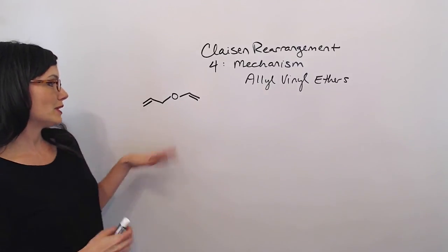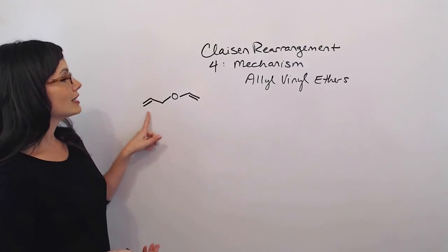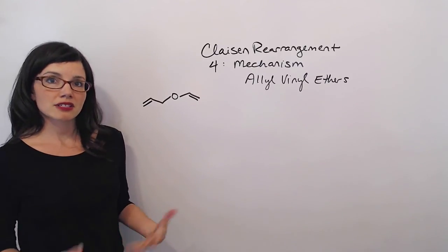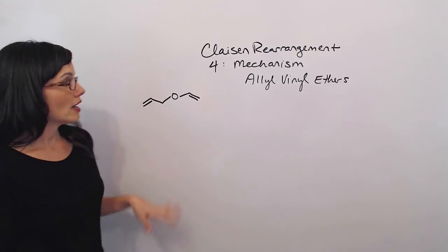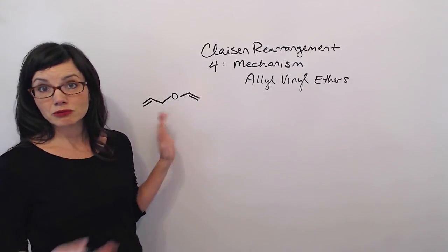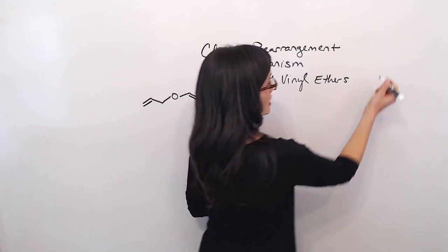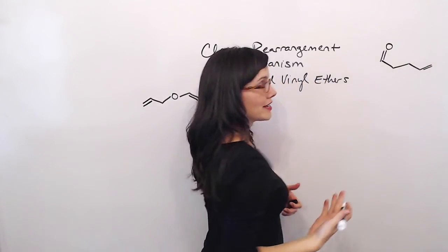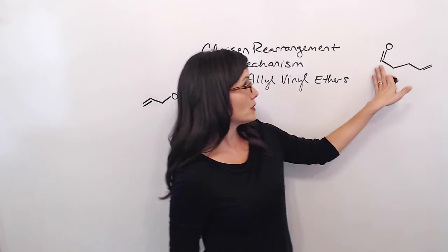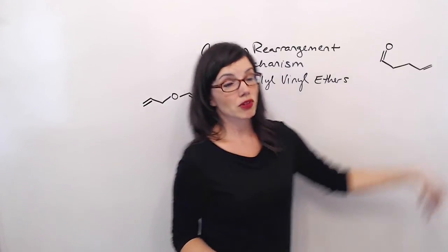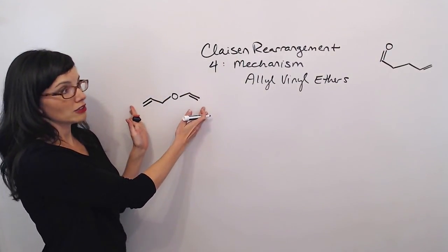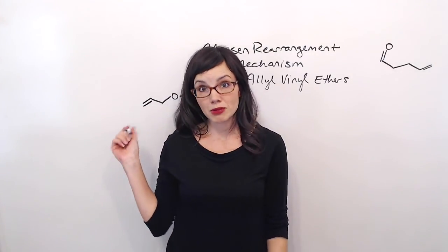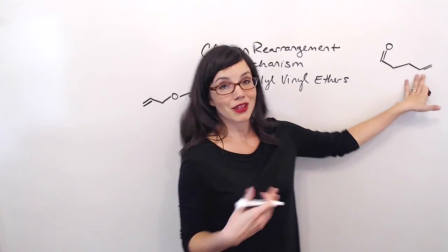Here's a very simple, actually the most simple, allyl vinyl ether. If I was going to do this mechanism, the first thing I would do is consider what my product is supposed to look like. I know that the most simple reaction gives us a product that's got a carbonyl and there are two sp3 carbons between the carbonyl and a carbon-carbon double bond. So this most simple allyl vinyl ether is going to give us this most simple product. The more substituents that this guy has, the more substituents this guy is going to have.